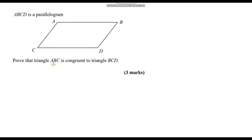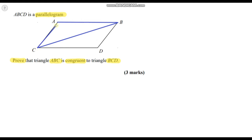Here I've got a typical GCSE question worth three marks. It says ABCD — this shape here — is a parallelogram, and we need to prove that triangle ABC is congruent to triangle BCD. Let's draw in our triangles: triangle ABC and triangle BCD, which goes from B to C to D.